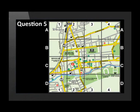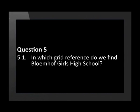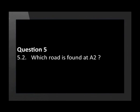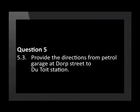This street map has a grid laid over it. In which grid reference do we find Blumhof Girls High School? Which road is found in A2? Provide the directions from the petrol garage at Dorp Street to Detroit Station.